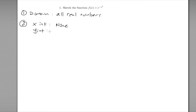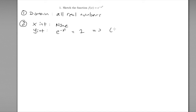For the y-intercept, we plug in x equals zero: that gives us e to the negative zero squared. Zero squared is zero, negative zero is zero, and e to the zero is just one. So there is a y-intercept at the point (0, 1).